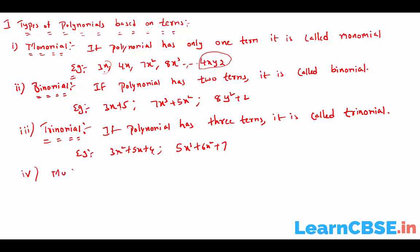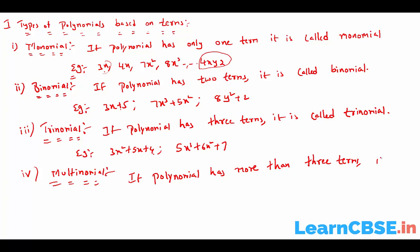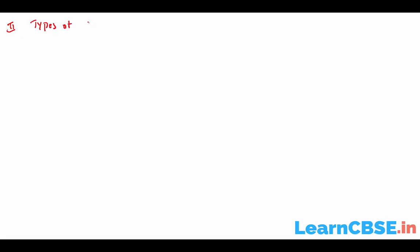Next is multinomial. If a polynomial has more than three terms, it is called a multinomial.